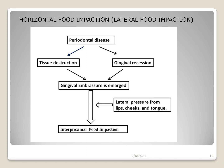The second type is lateral food impaction. In lateral food impaction, lateral pressure from the lips, cheeks, and tongue causes food to become entrapped between the teeth. This occurs when periodontal disease causes tissue destruction and gingival recession, which enlarges the gingival embrasure. Once enlarged, lateral pressure from lips, cheeks, and tongue forces food into the embrasure, causing interproximal food impaction. Since lateral forces are responsible, it is also known as horizontal food impaction.